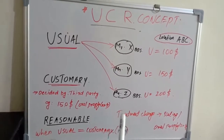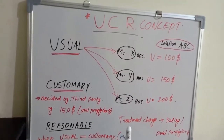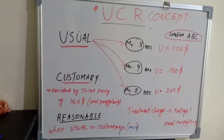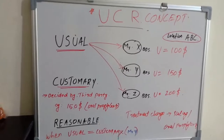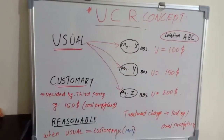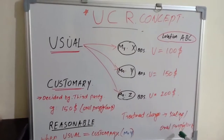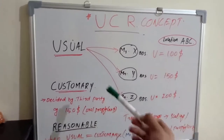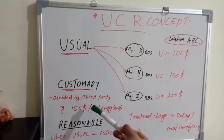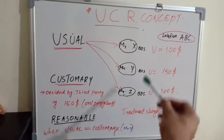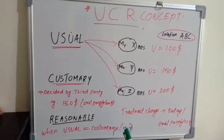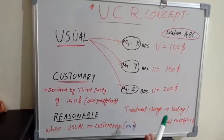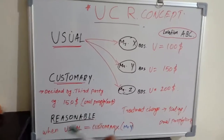The UCR concept works as follows: the usual fee of these dentists is collected by the third party and a customary fee is calculated, which is customer friendly. Even if a dentist charges 250 or 300, there is no point — the customary fee is decided by the third party and they determine how much you can ask from the patient. This UCR concept is the best method of payment because it prevents exploitation of patients.